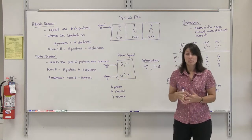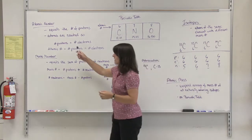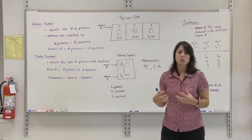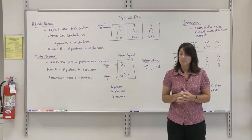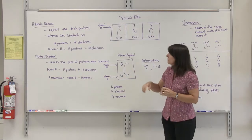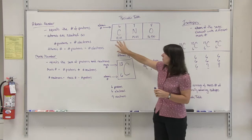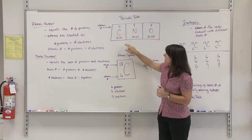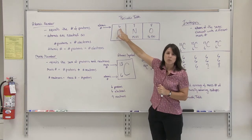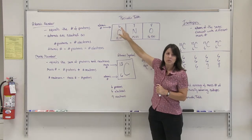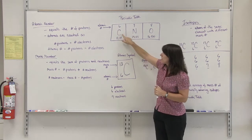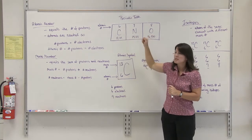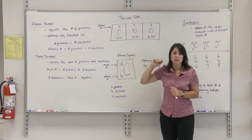The first way is by using the atomic number. The atomic number equals the number of protons that are in the nucleus of that specific atom. The atomic number is listed on the periodic table, and I have a few elements off the periodic table listed here. The atomic number is the whole number listed right above the symbol for the element. So for carbon, the atomic number is 6. For nitrogen, the atomic number is 7. And for oxygen, the atomic number is 8.